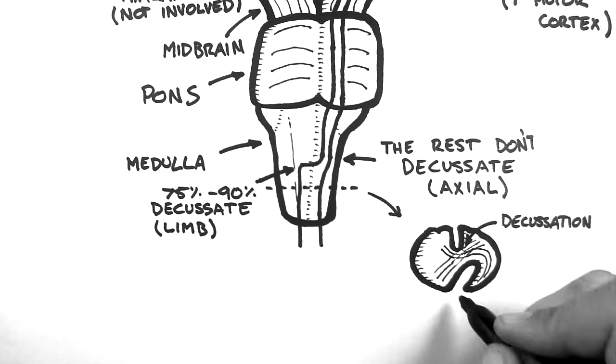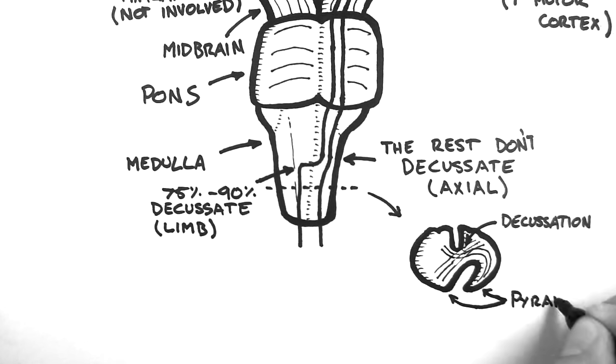The pyramids are the corticospinal tracts as they run through the medulla. For this reason, the corticospinal tract is sometimes called the pyramidal tract.